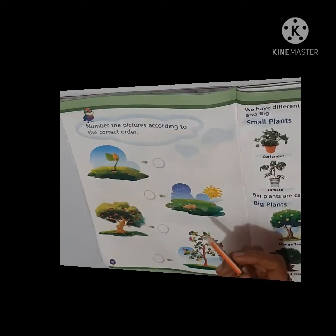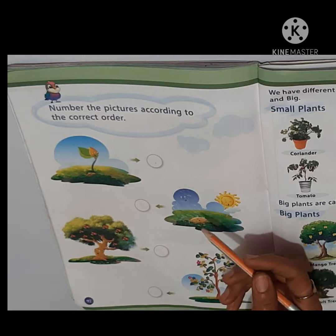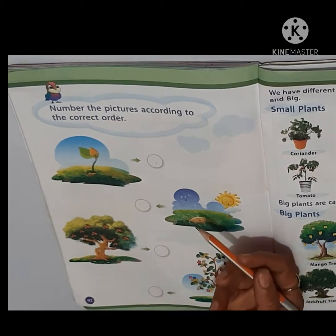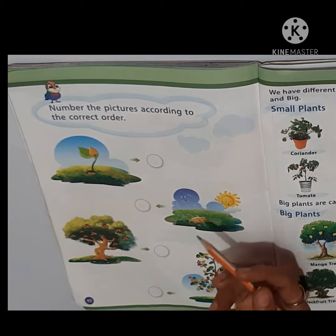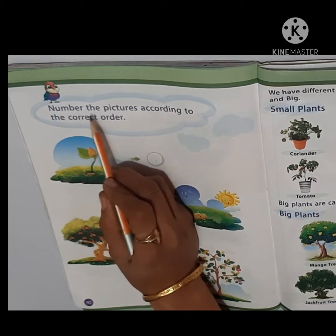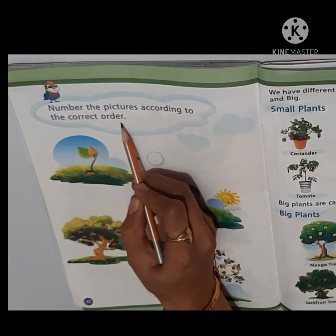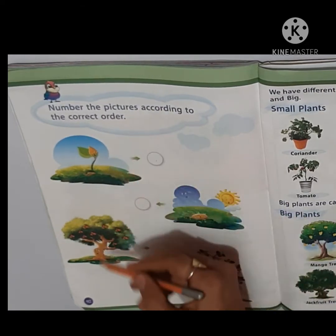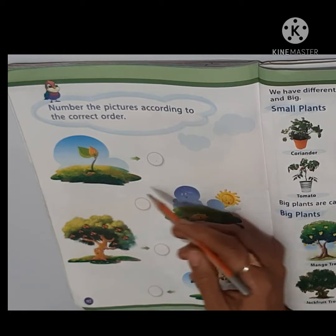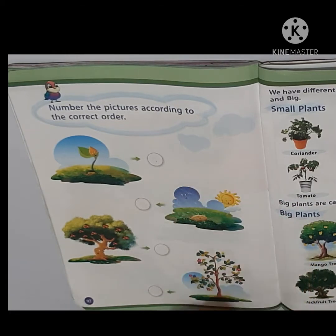What's on this page? Dear students, now we will do an activity on page number 92. What we will do on this page? Number the pictures according to the correct order. Here we have four pictures. You have to give them the correct order.